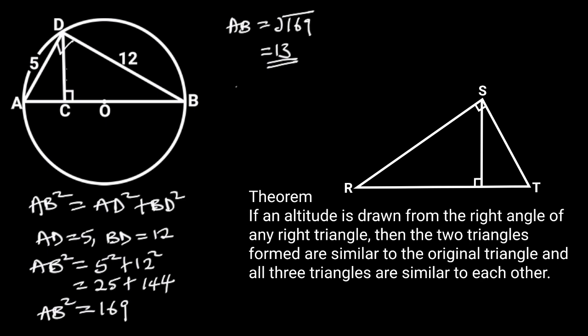From this theorem, it shows that triangle ACD is similar to triangle ABD. And the proportionality of their corresponding sides is AD over AB is equal to CD over BD.